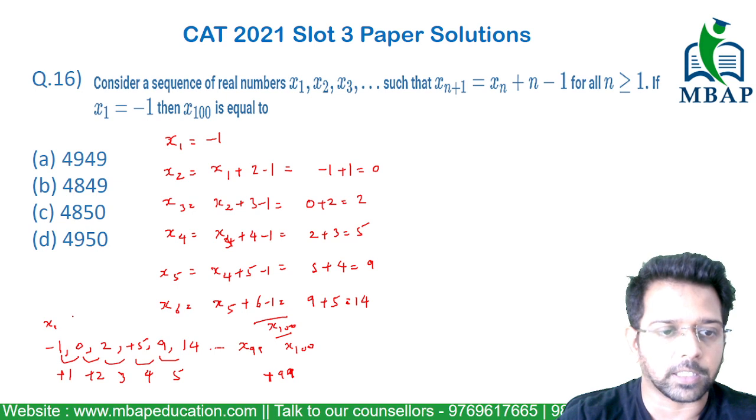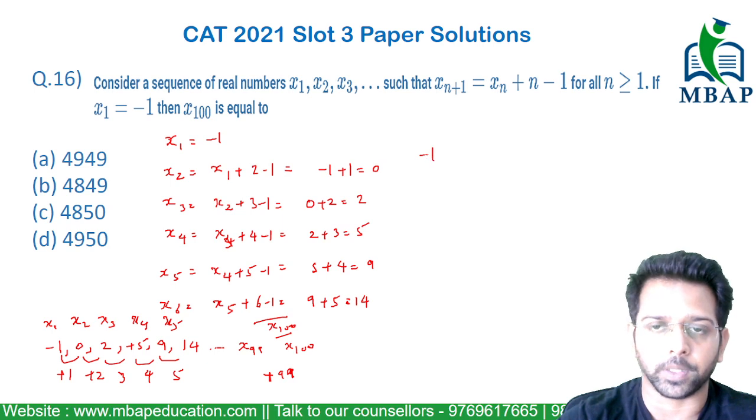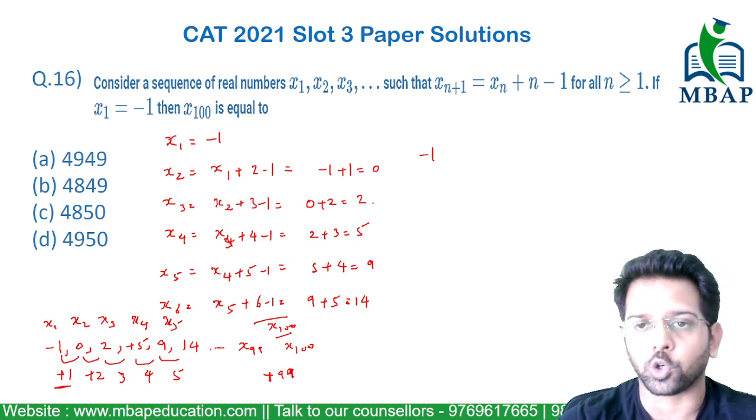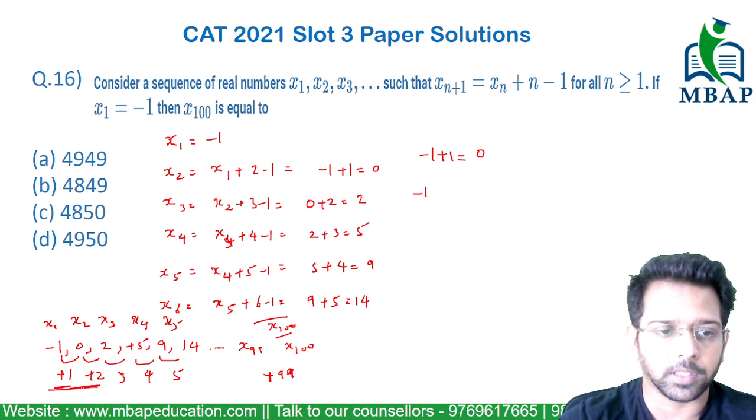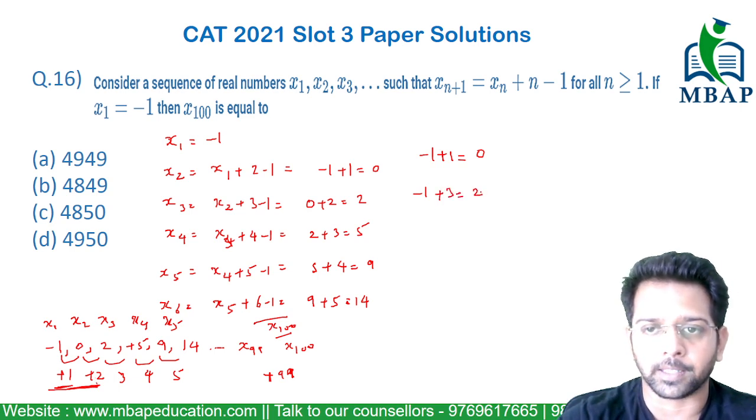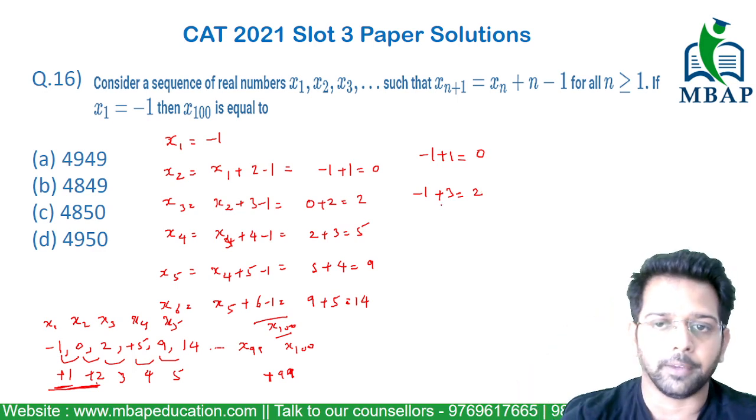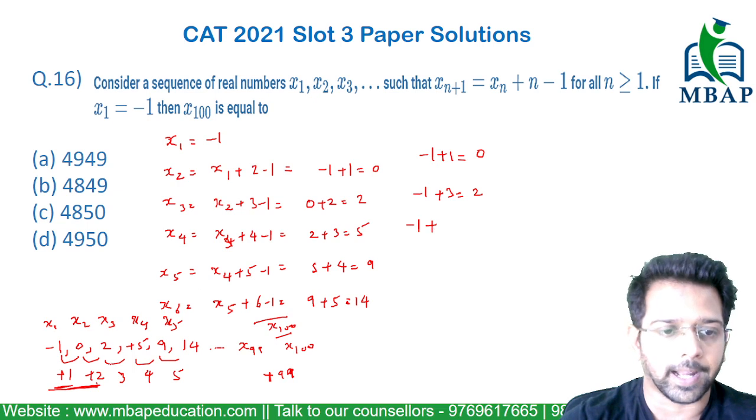Now, let's see the logic. My first term is minus 1. If I have to find the second term, add the first common difference, which is minus 1 plus 1 equals 0. If I have to find the third term, my first term is minus 1, add the sum of first two common differences, which is 1 plus 2 equals 3, and the third term becomes 2. If I have to find the fourth term, start with minus 1 and add the sum total of first three common differences: 1 plus 2 is 3 plus 3 is 6. 6 minus 1 is coming out to be 5.